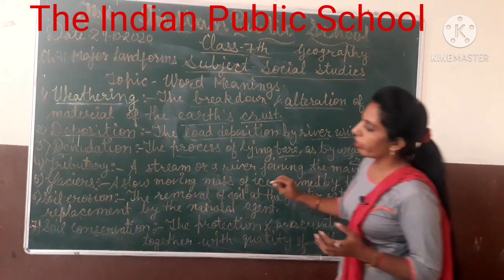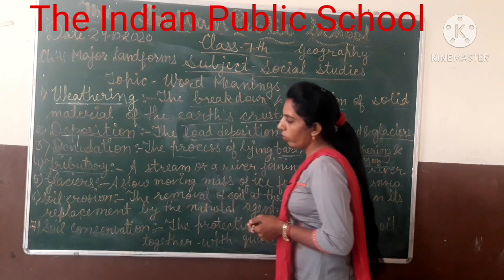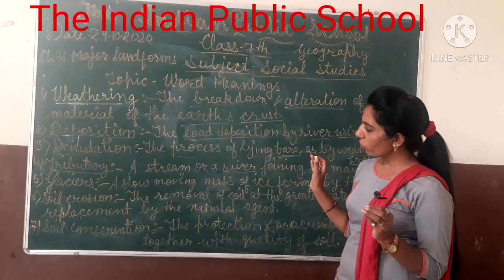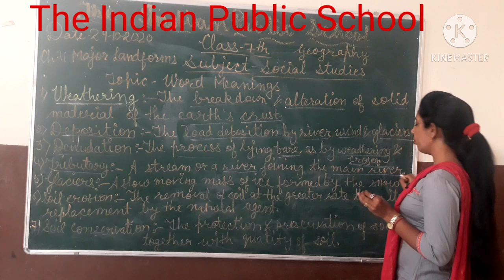Fourth is the tributary. Tributary is a particular place where two rivers join. One big river and small tributaries are found in the main river. We call it tributary.